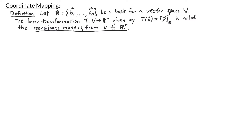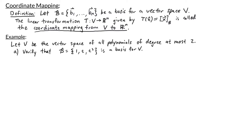Let's look at a quick example. Consider the vector space V of all polynomials of degree at most 2. Part a says verify that the set b consisting of {1, t, t²} is a basis for V. To check that b is a basis, I need two things: that the elements of b are linearly independent, and also that those elements span V. To check linear independence, I want to look at the equation c1 times 1 plus c2 times t plus c3 times t² equals 0, and see if there are non-trivial solutions.